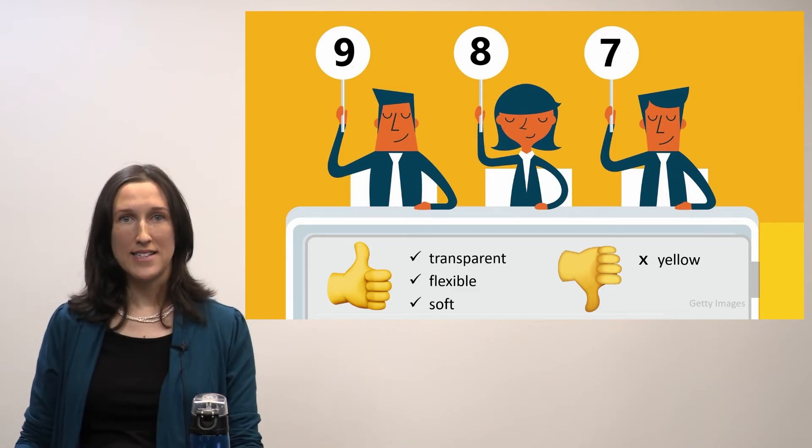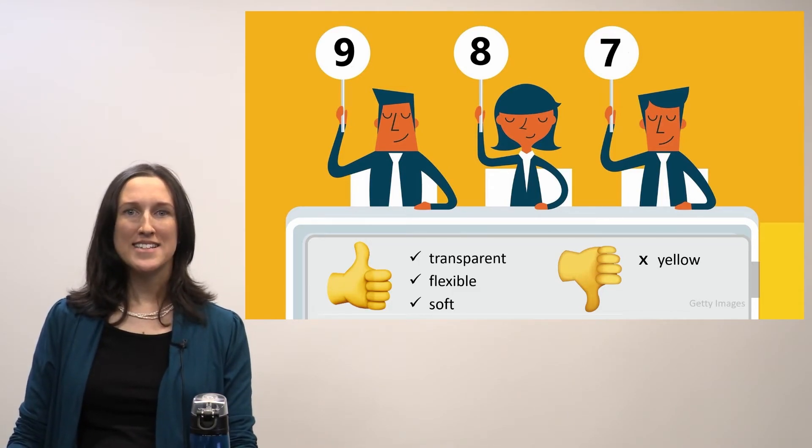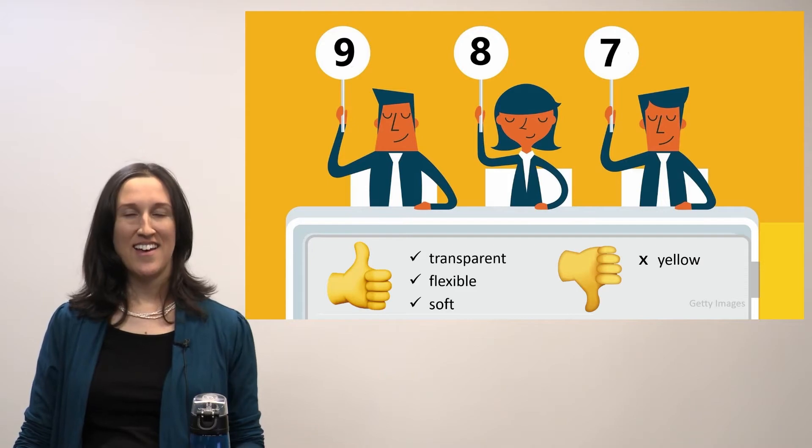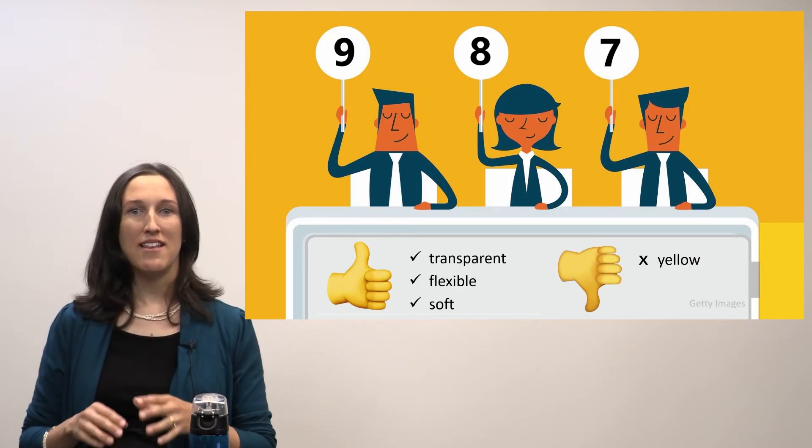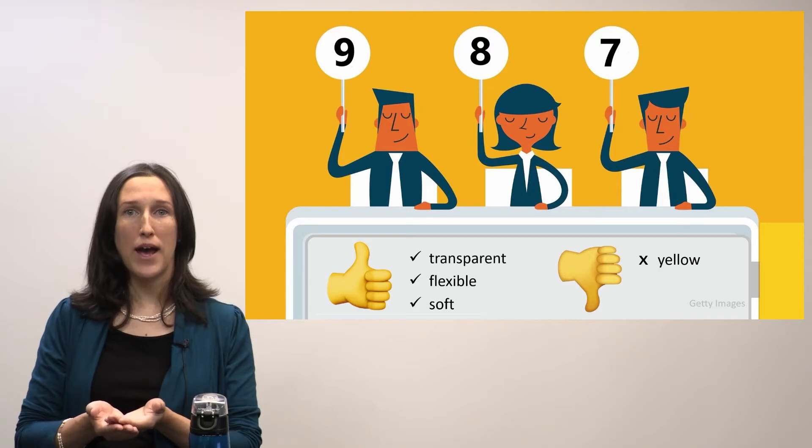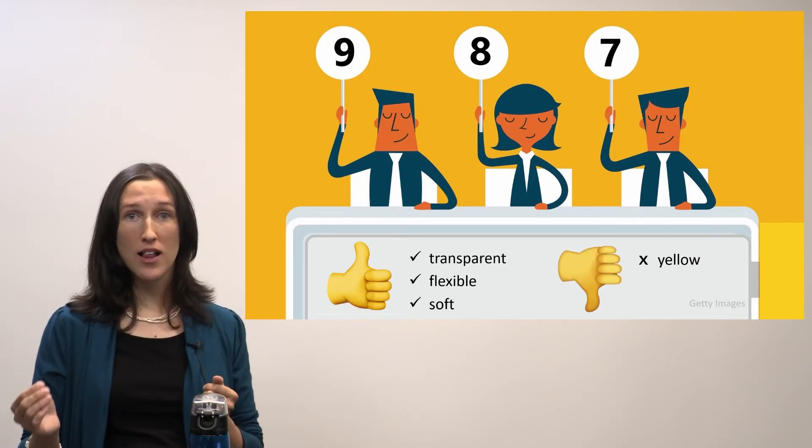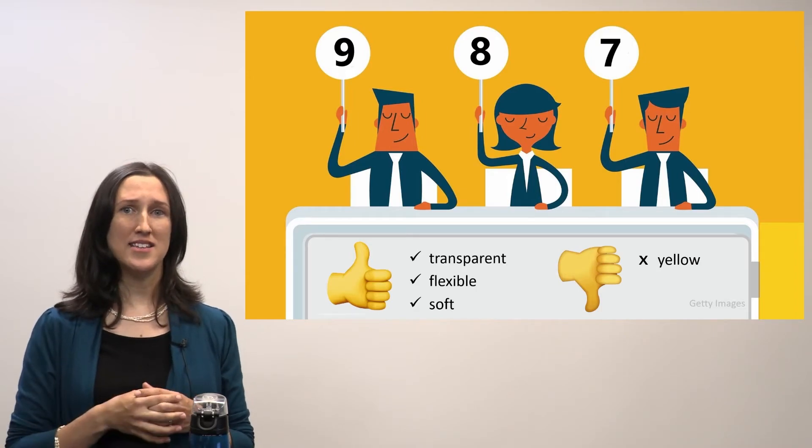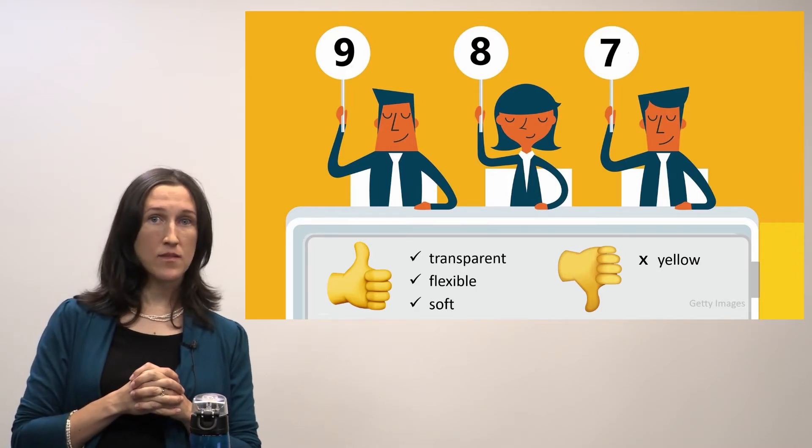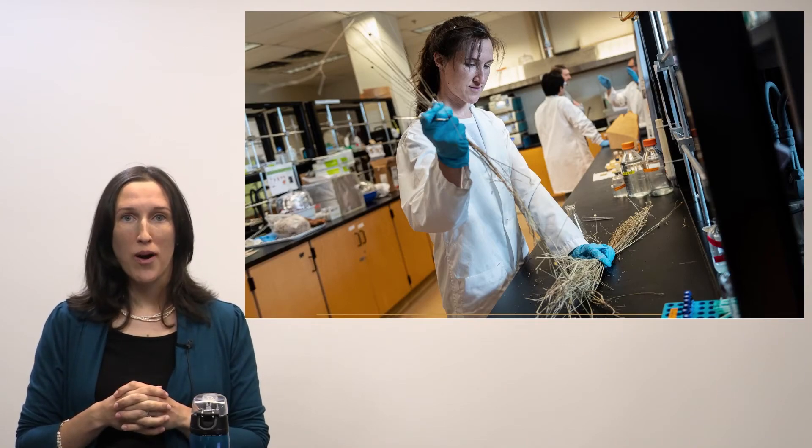Then we went to an aesthetic appeal study where we asked trained panelists what they thought of the bioplastic. Panelists liked its transparency, they liked that it was flexible, they liked how it was soft and conformed to the shape of bread. However, many panelists flagged the yellow color of the bioplastic, citing it as unappealing. So I had to go back to the lab and do more work.